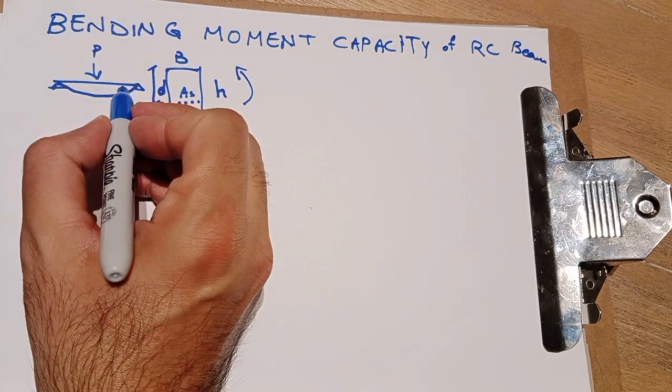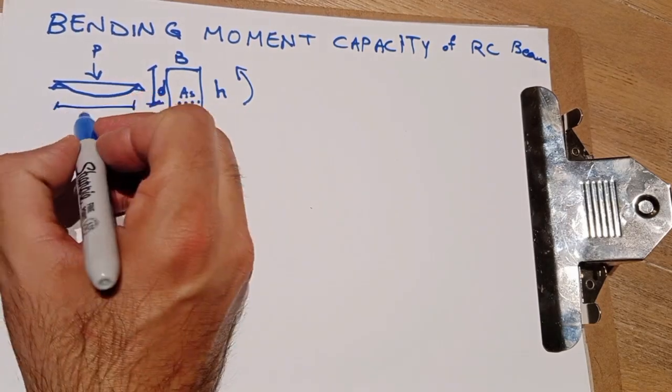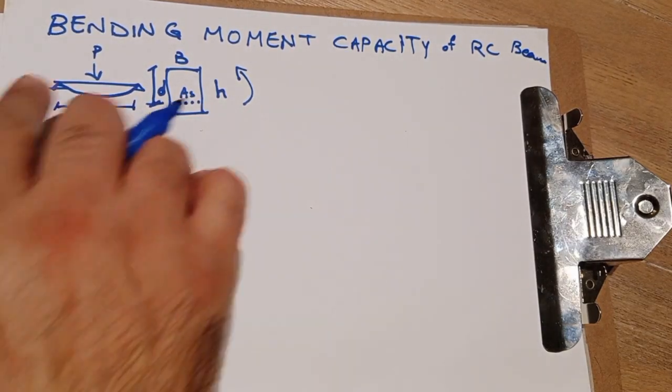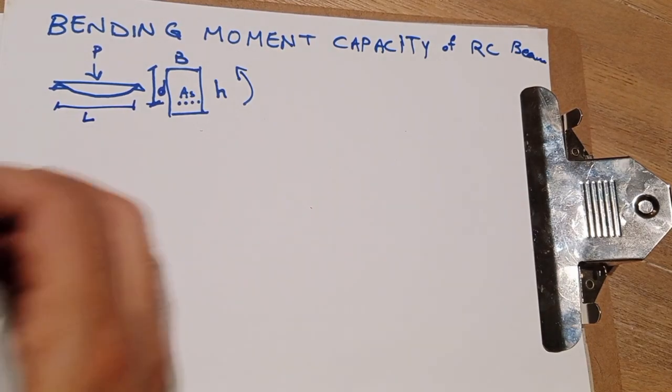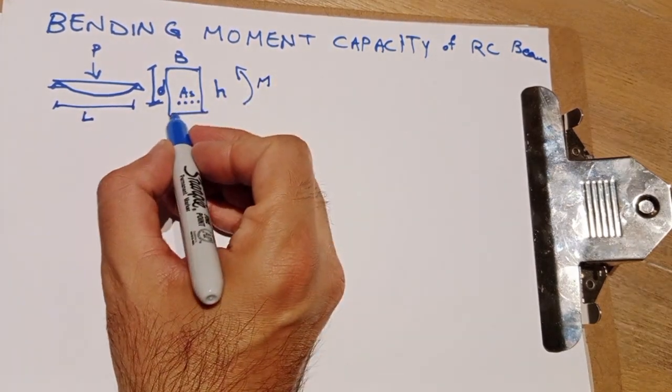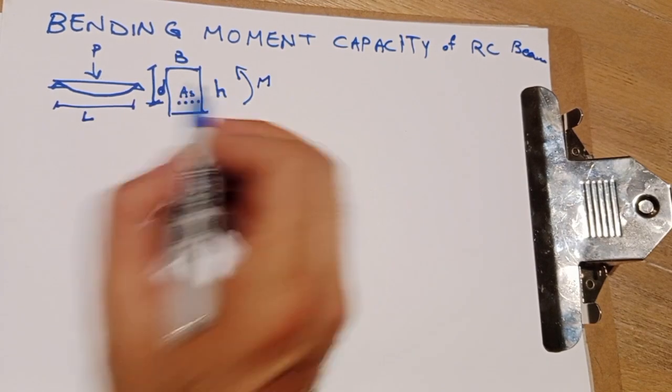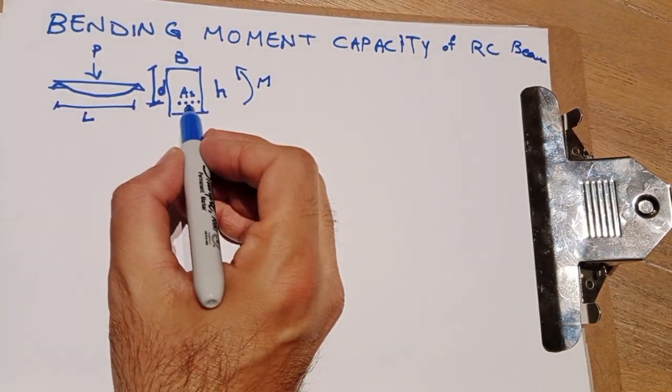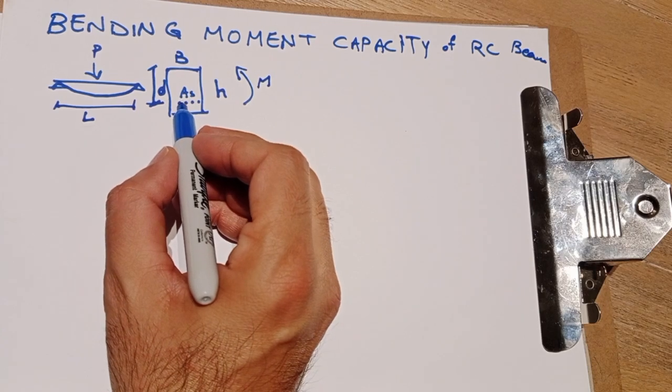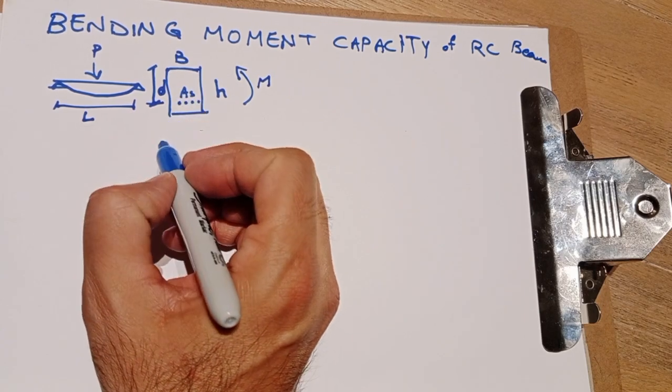Assume we have a beam with the length L under some loading that applies bending on the section, and section is B width and H depth, and some reinforcement in tension with the total area of As.